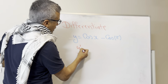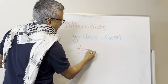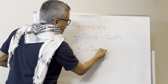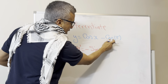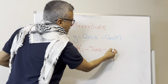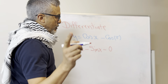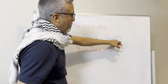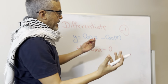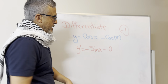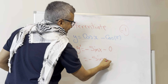y prime equals the derivative of cos, which is negative sine, so that's going to be negative sine x. cos(π) is a constant, so the derivative of a constant is zero — it's not negative sine π, that's the mistake students make. Remember, cos(π) equals negative one, and the derivative of negative one is zero anyways. So the final answer is negative sine x.